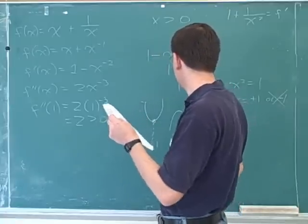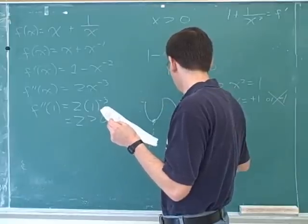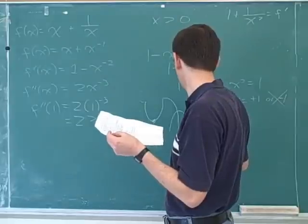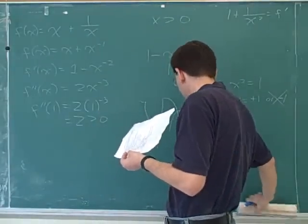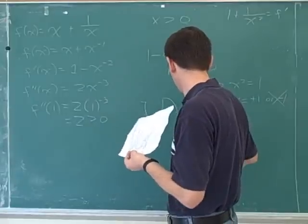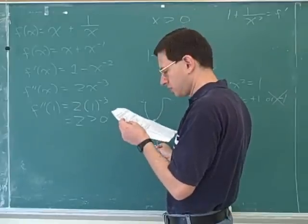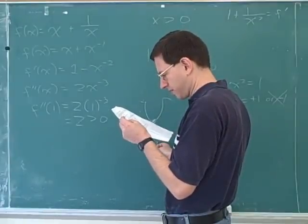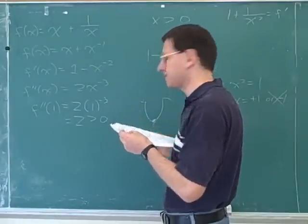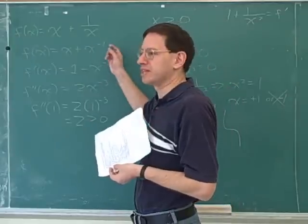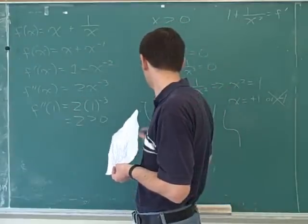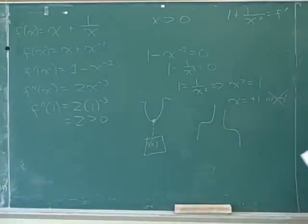We know this is never going to turn around and find another minimum that's even lower, because there are no other positive critical points. This is the only positive critical point, so we're never going to start dipping and getting even lower. This is the absolute minimum. The answer is x equals one. So basically what we did here is we set the first derivative equal to zero, and then we used the second derivative test to confirm it was a minimum.